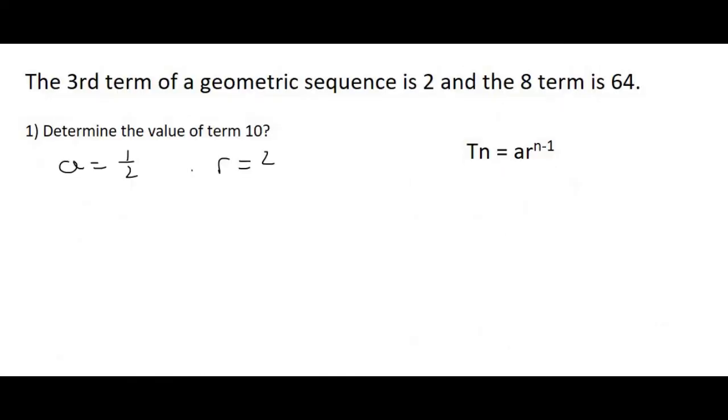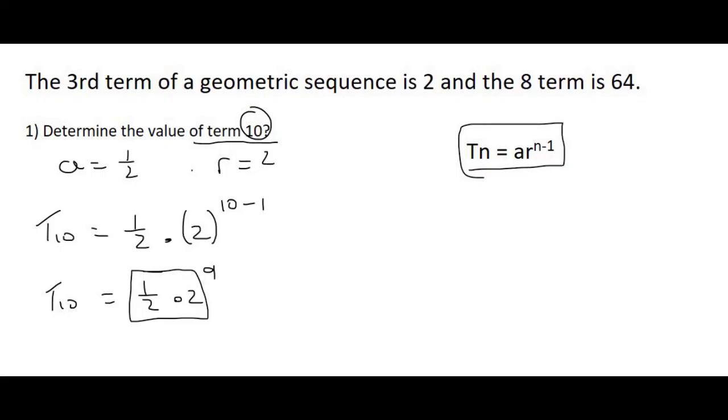So now they want us to determine the value of term 10. So we use our geometric formula. And so term 10 is equal to A, which is a half. R is 2. And N is, well, we're looking for term 10, so we'll just say 10 minus 1. And so term 10 is going to be equal to a half times 2 to the power of 9. And then remember, don't multiply those two together because that 9 is then getting ignored. So what I advise is just type that all in on the calculator. And term 10 will have a value of 256.